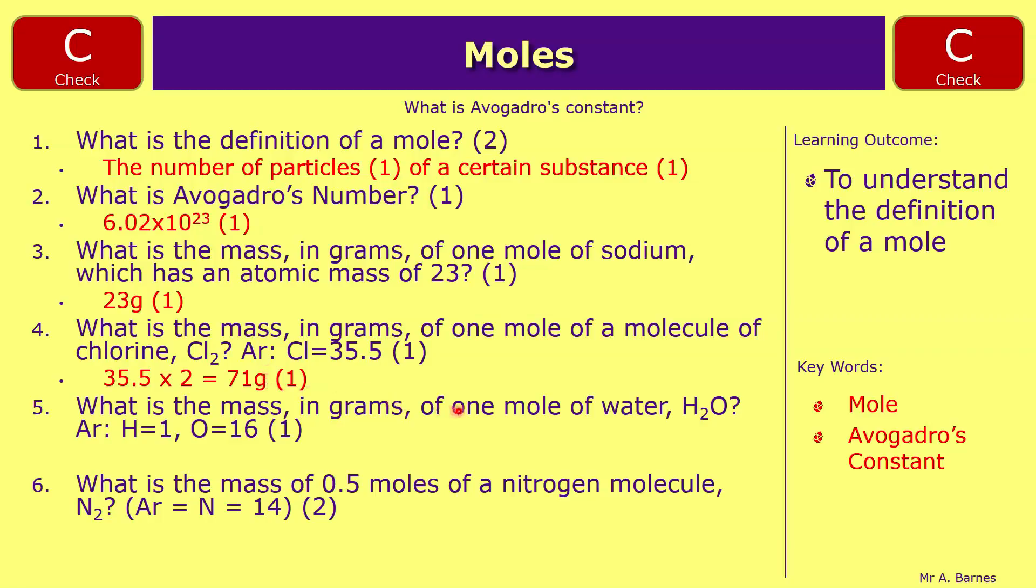Question five: what is the mass in grams of one mole of water H2O? So you've got two hydrogens and one oxygen, so that's two times 1 plus 16 gives you 18 grams.